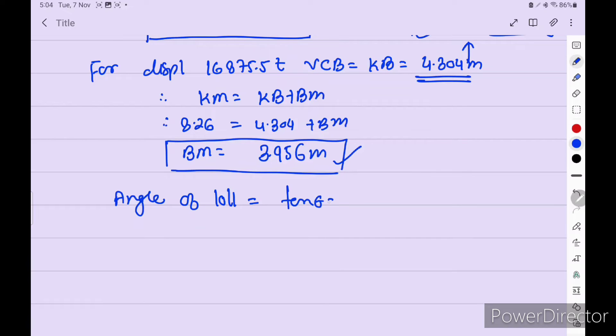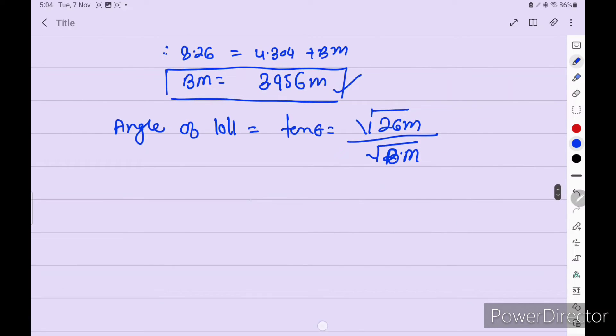Square root 2 GM upon square root BM. Okay. So put the value in that. We get 2, 0.004 divide by BM is equal to 3.956. So tan theta is equal to 0.0047.